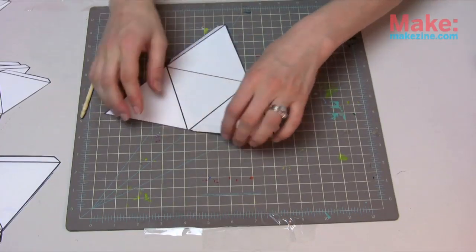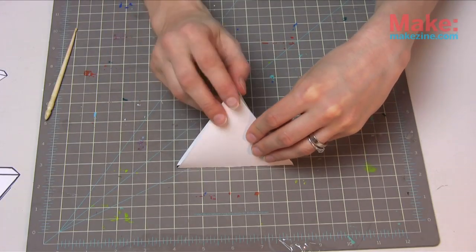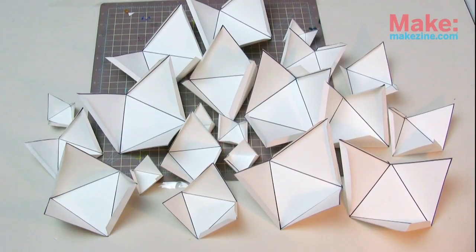Fold your crease lines in with the black lines on the inside of your triangle and set the finished folded triangle aside.